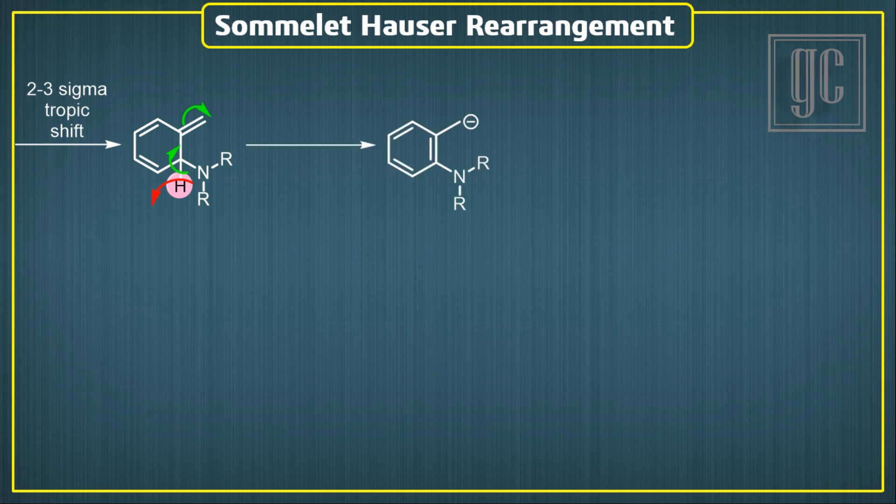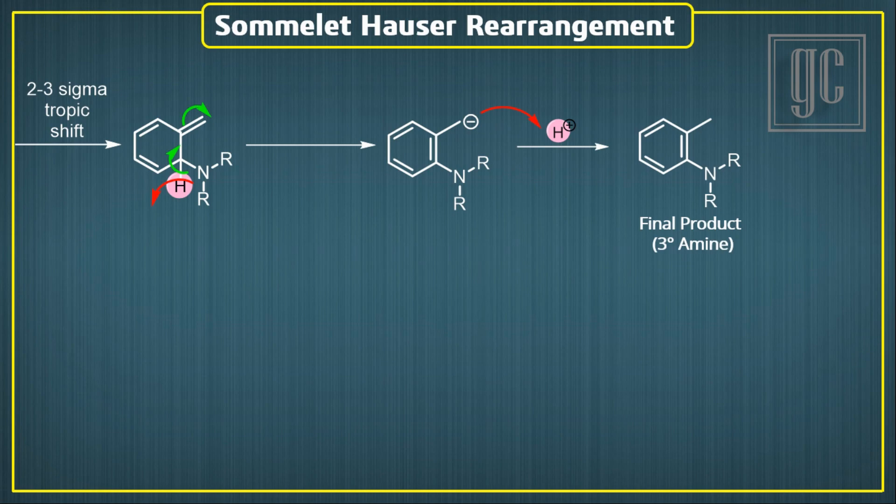After displacement of the pi electrons, a carbanion is formed that is later neutralized by a proton, and the final product, a tertiary amine, is formed.